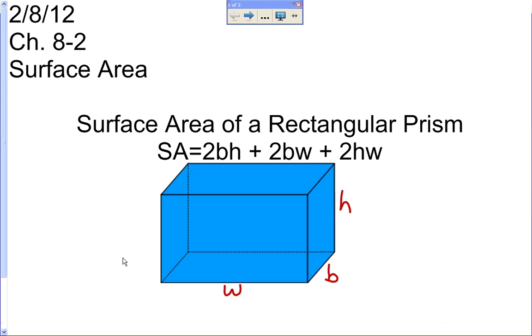These notes are from chapter 8-2 in the textbook, and we're still talking about surface area. Today we're going to focus on surface area of a rectangular prism. What we've been doing is breaking these down into a net and finding all of the different areas of the surfaces and adding them together. Today I'm going to introduce a formula to do that.